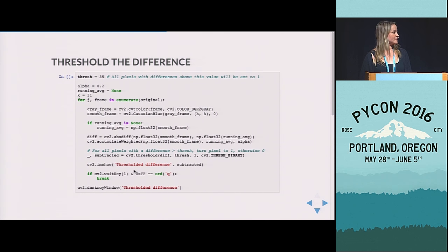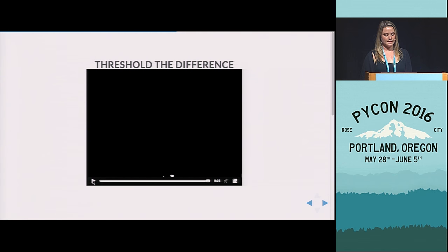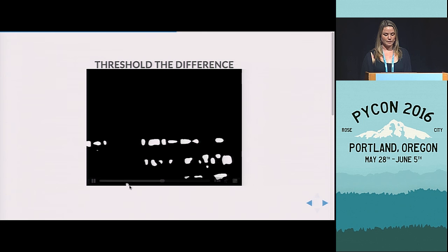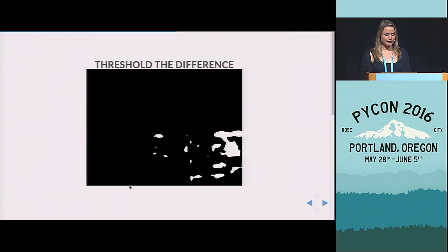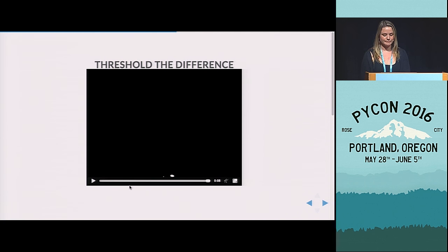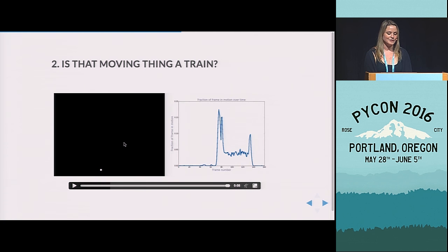So we can pick a value to threshold and make anything above that value something that's in motion. And so that can be done with this threshold function. And we can see now that we can reduce a lot, but not all, but a lot of the motion. So you'll notice that we've now identified places of movement. But now we've got to figure out, is that moving thing a train?